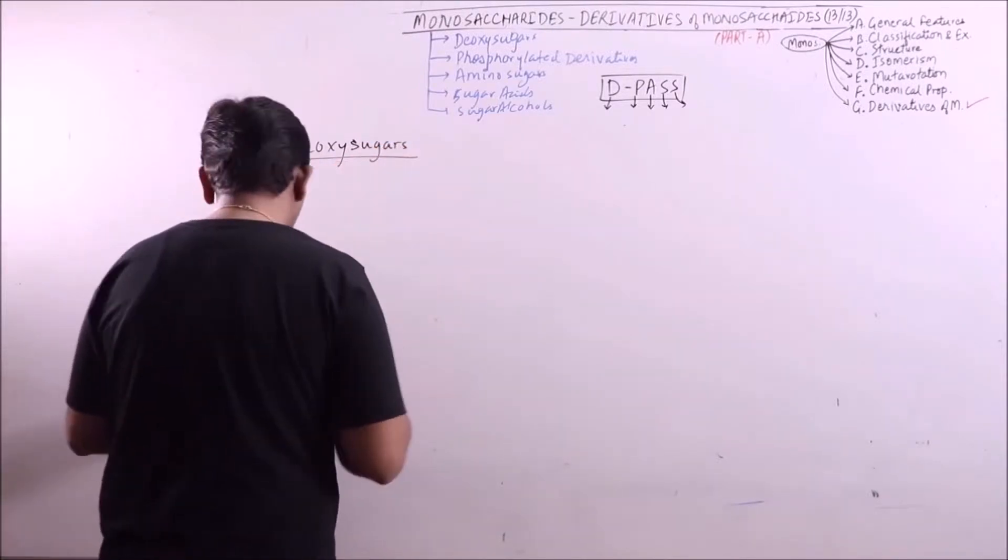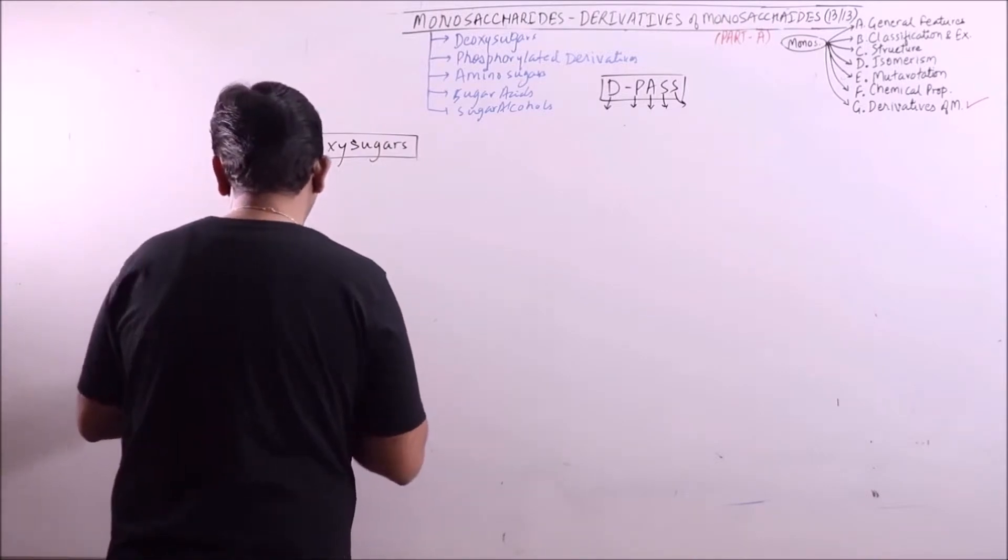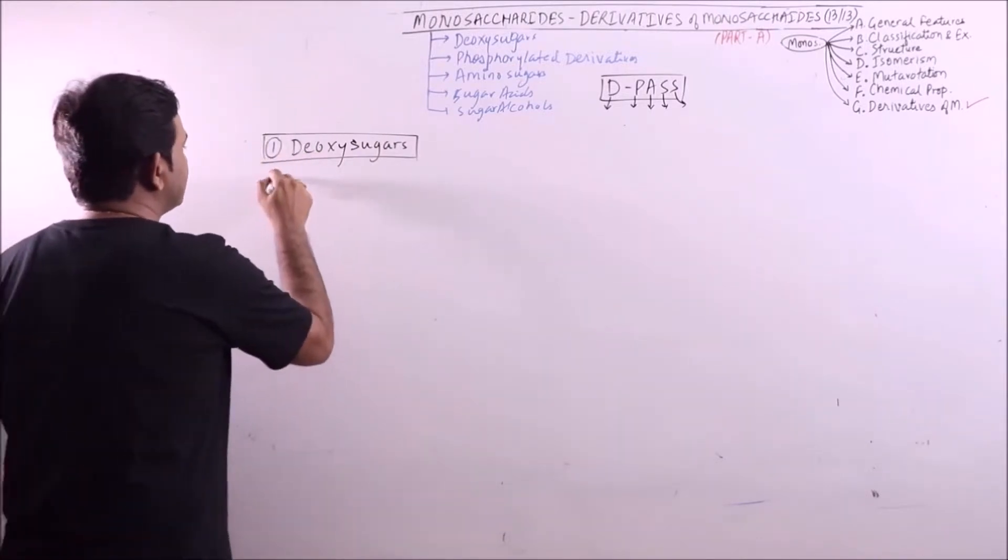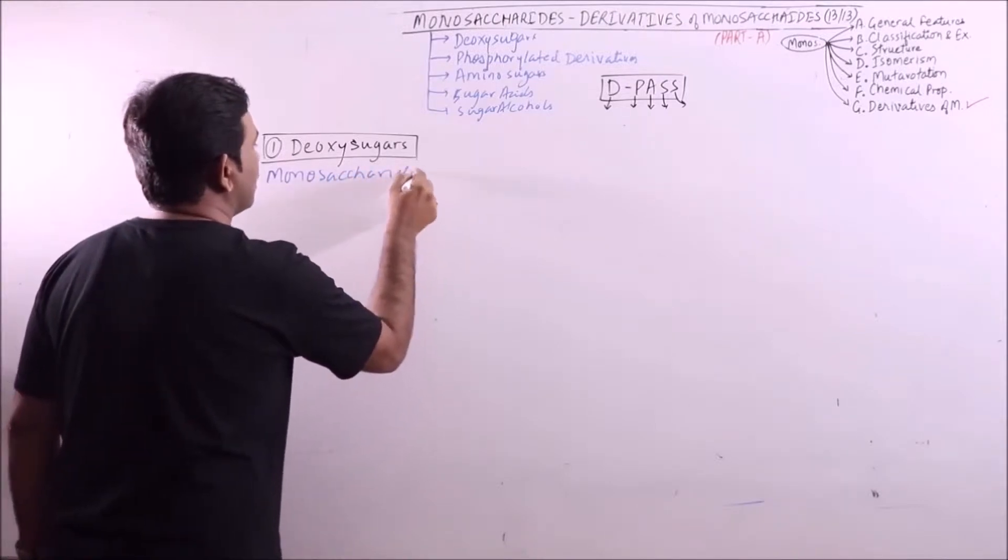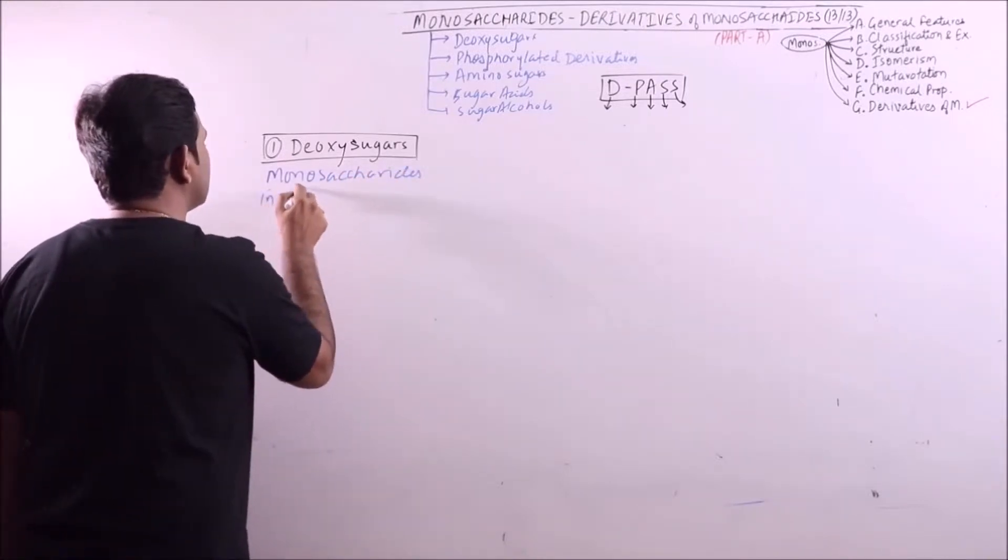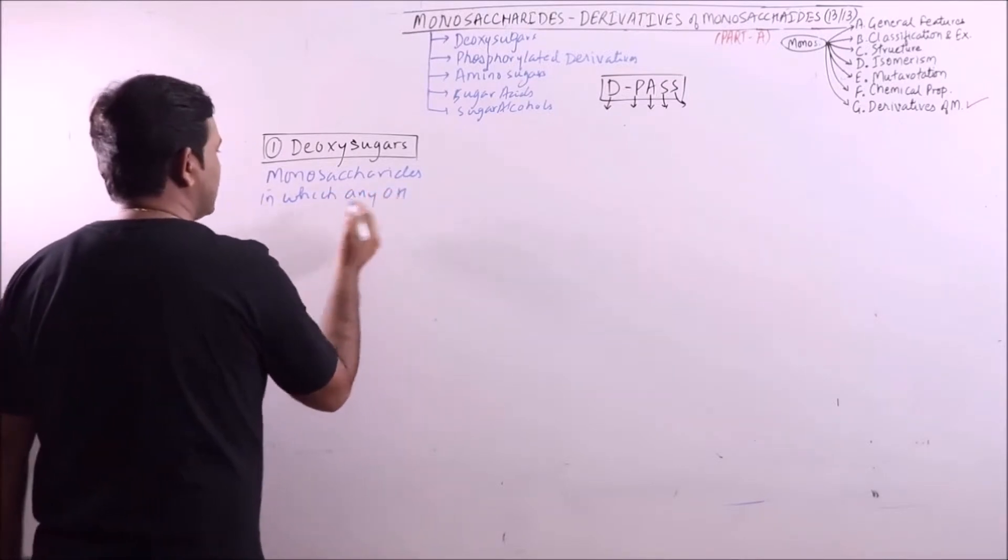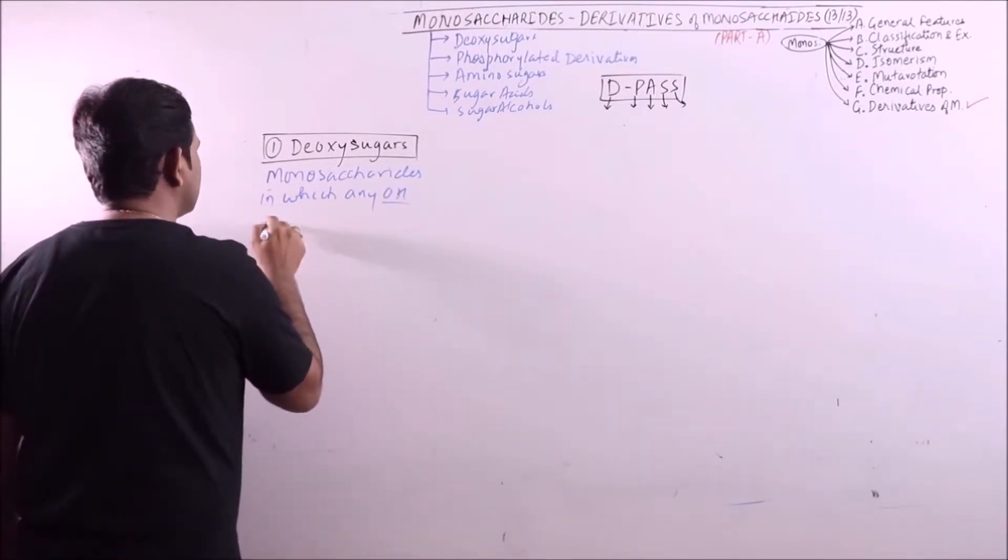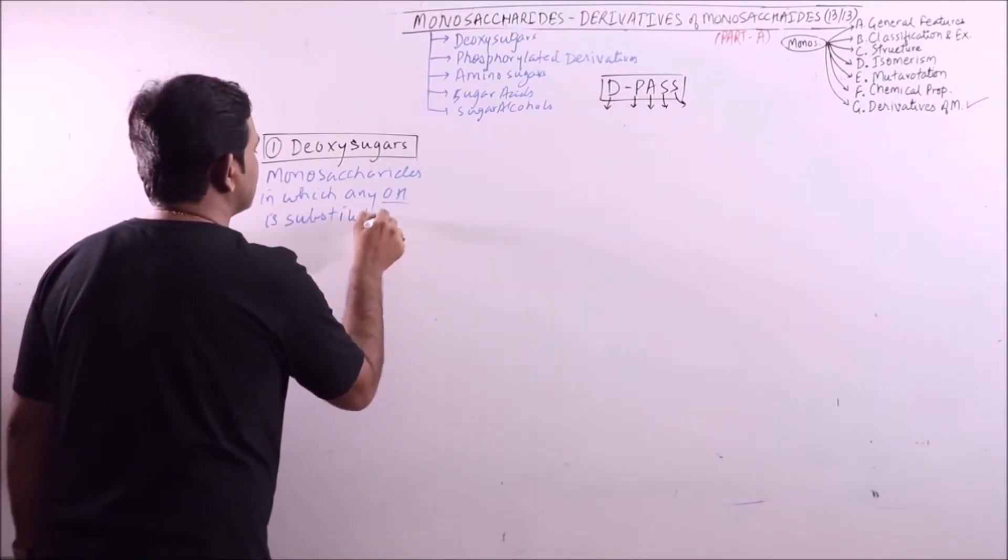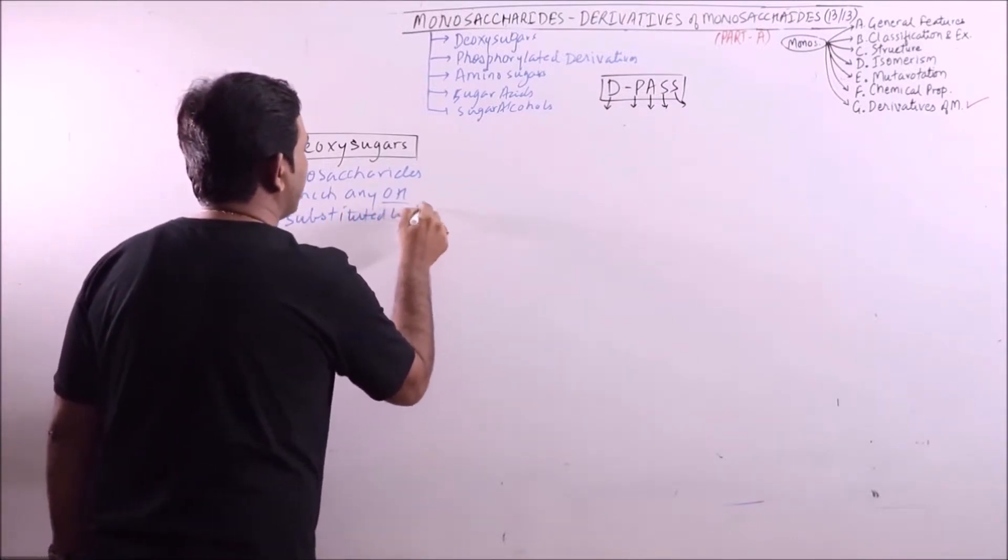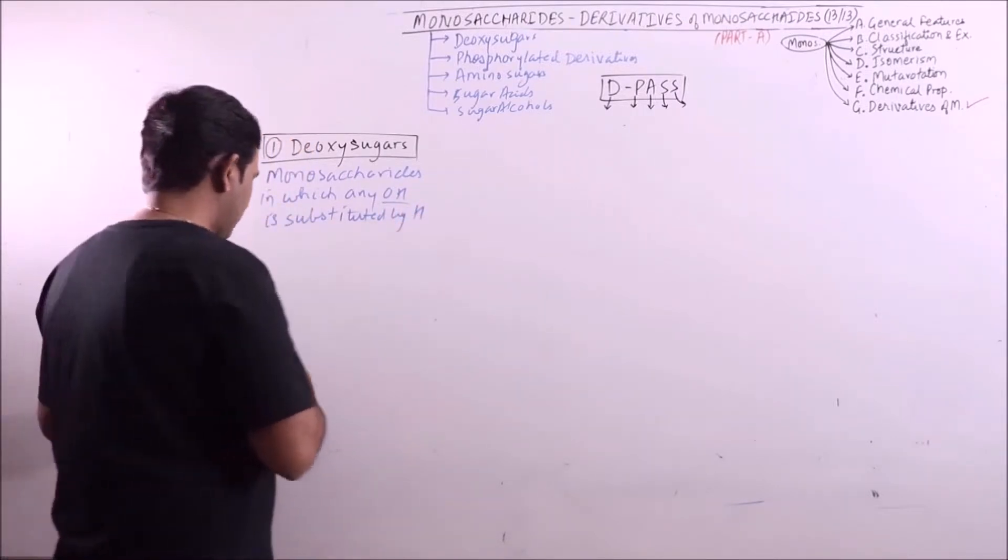Now what are these deoxysugars? Monosaccharides in which any OH, that is hydroxyl group, is substituted by H, then it is termed as deoxysugars.